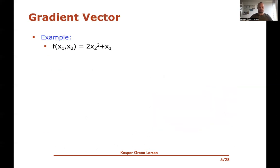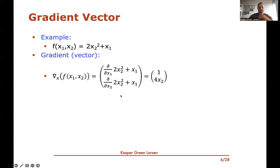Let's work through an example. Say I have a function of two variables: f(x1, x2) = 2x2² + x1. The gradient is a vector with two entries: the partial derivative with respect to x1 and the partial derivative with respect to x2. For ∂f/∂x1: the first term is a constant (goes away) and the partial of x1 is just 1. For ∂f/∂x2: the second term x1 is a constant (goes away) and the partial of 2x2² gives 4x2. So the gradient is [1, 4x2].